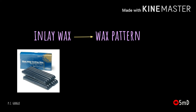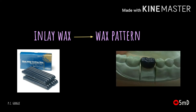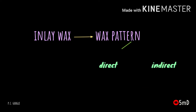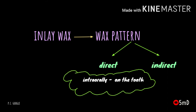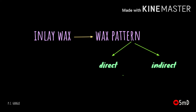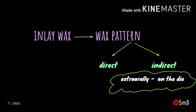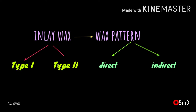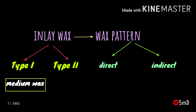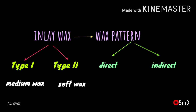Inlay waxes are used to prepare wax patterns. Preparation of a wax pattern is one of the initial steps in the casting procedure. Wax pattern fabrication can be either direct or indirect. In the direct method, the wax pattern is fabricated intra-orally on the prepared tooth surface. In the indirect method, the tooth preparation is made into an impression and a die on which the wax pattern is prepared. There are two types of inlay waxes: Type 1 is the medium wax used for direct wax pattern fabrication, and Type 2 is the soft wax used for indirect wax pattern fabrication.